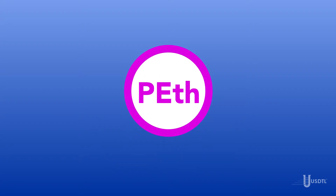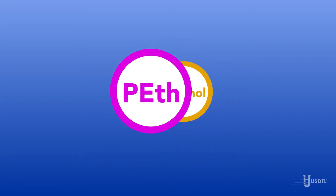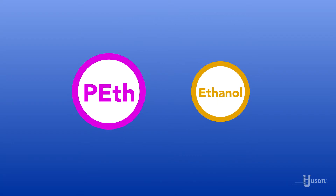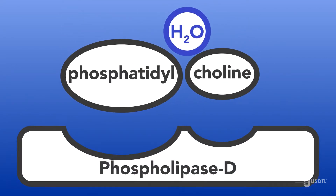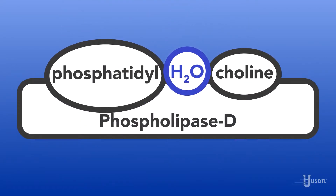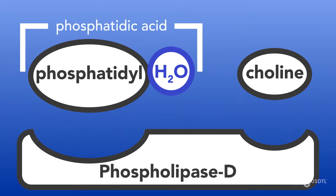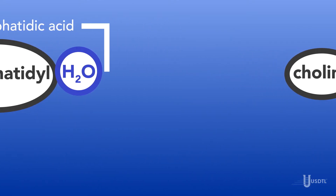Phosphatidyl ethanol is a direct ethanol biomarker because the ethanol itself is incorporated into the final product. In the normal human state, when ethanol is not present, phosphatidyl choline is metabolized by phospholipase D into phosphatidic acid and choline. These two products are then used in other processes by the body.